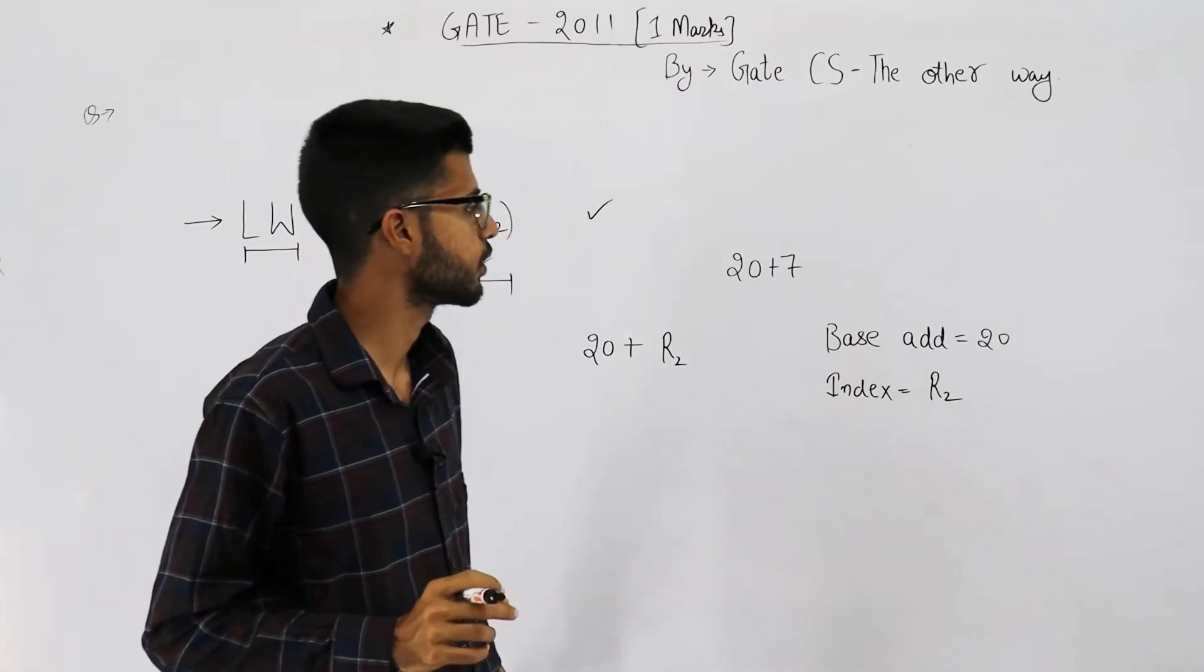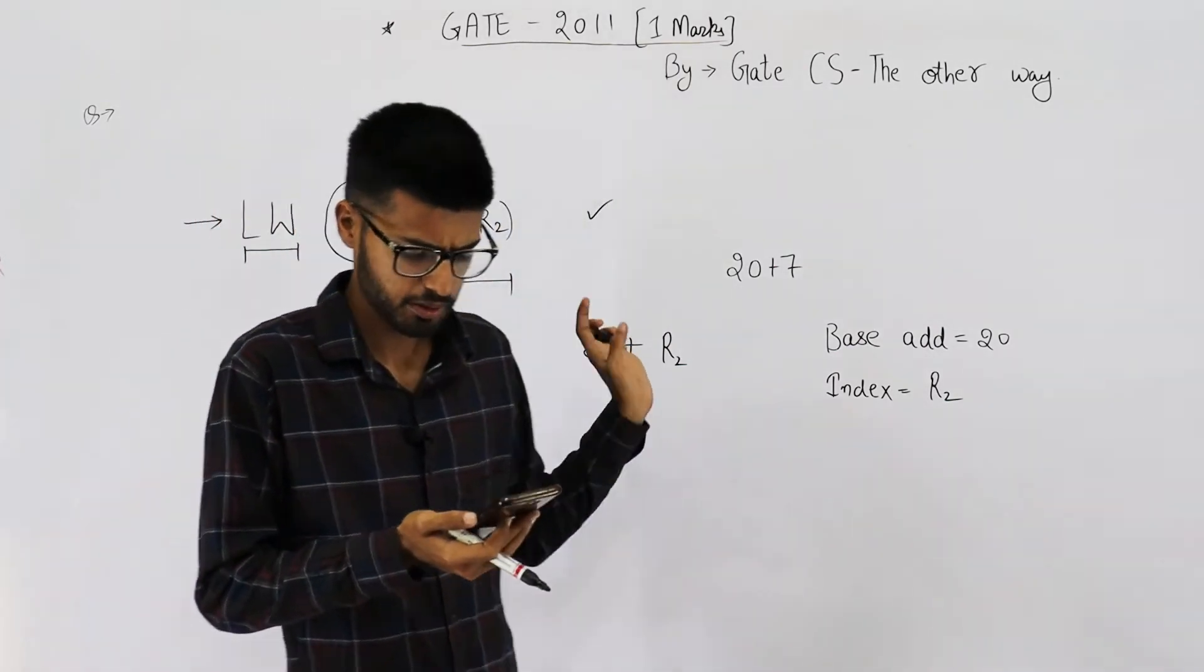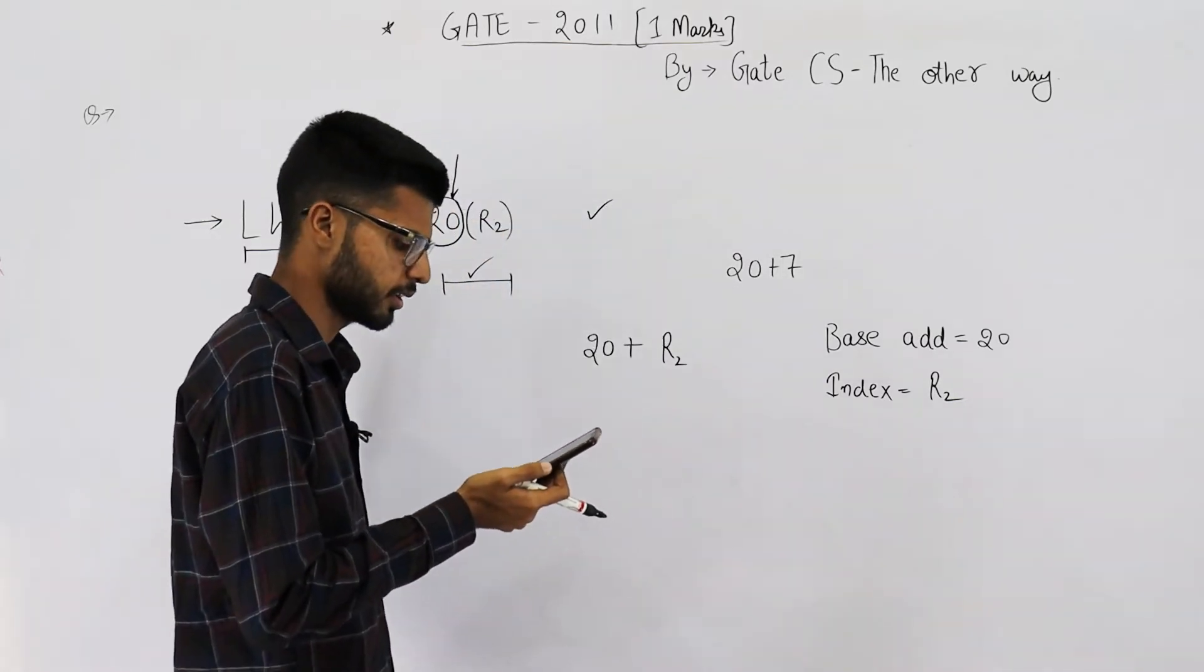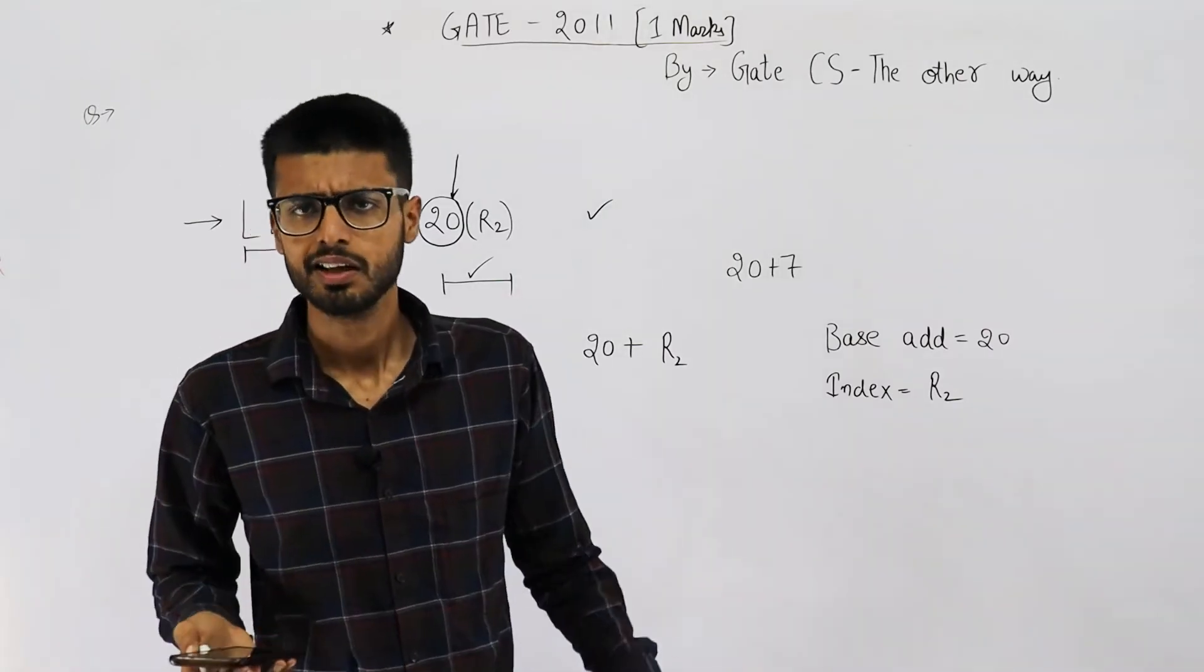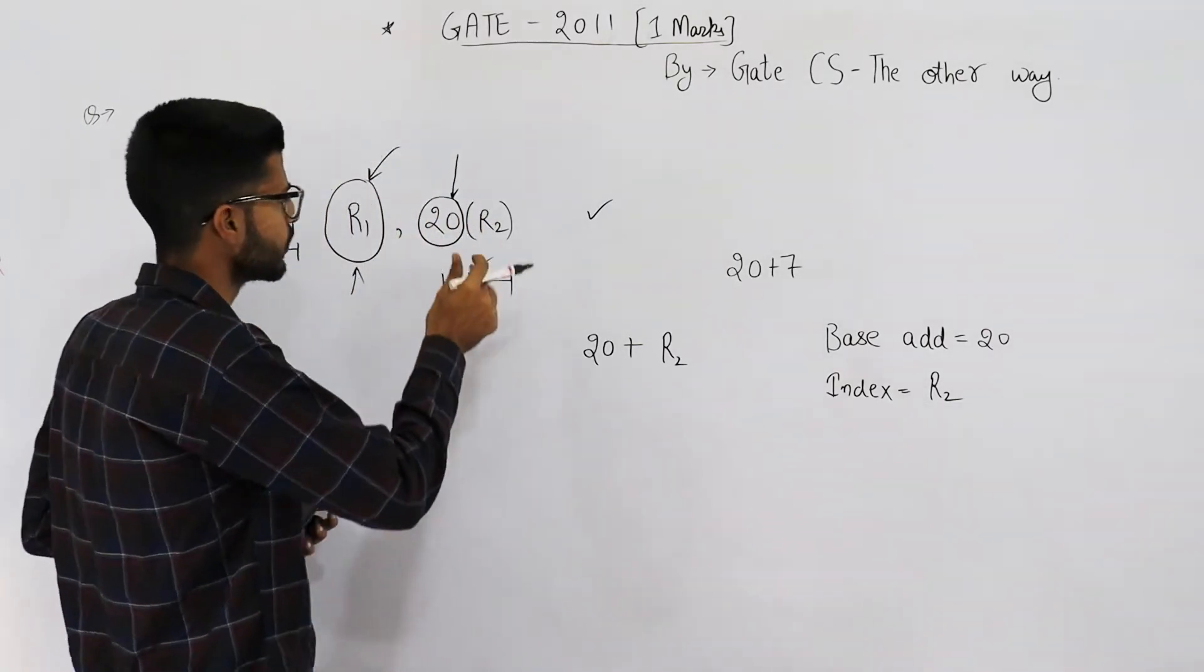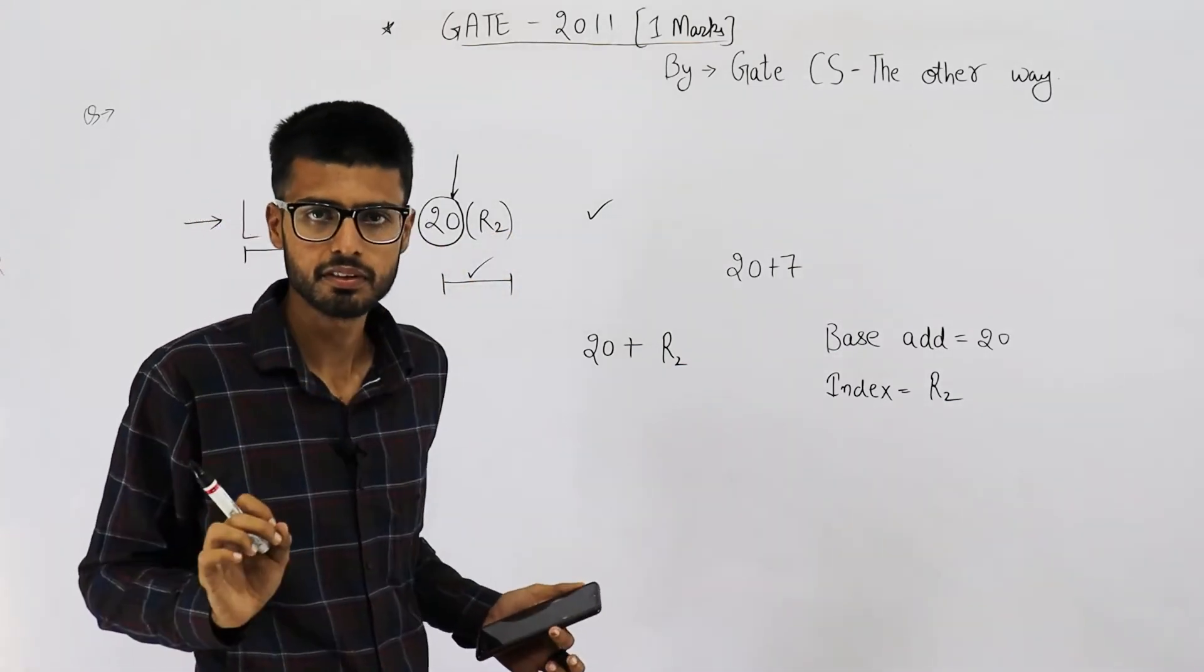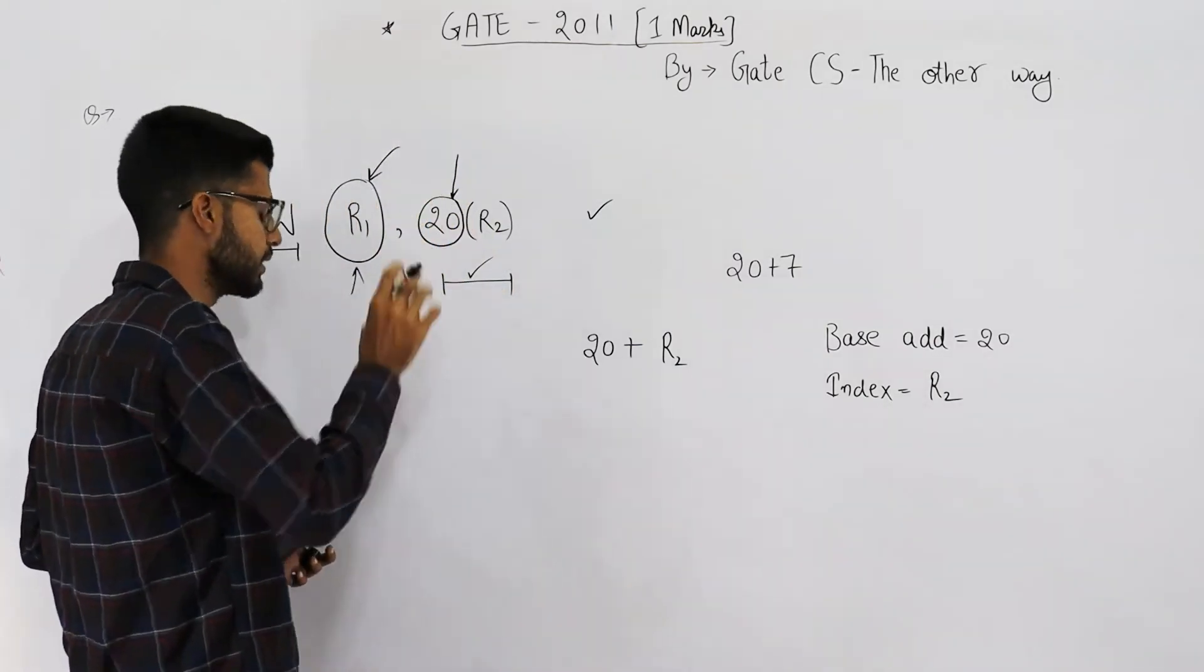Now we'll also analyze the options. Answer is D part, base indexed addressing mode. But still let's analyze the options. First one is immediate addressing. No, it's not immediate addressing. Immediate addressing means whatever bits are specified here, they are the data itself or they are the operand itself. We don't specify any address in immediate addressing.